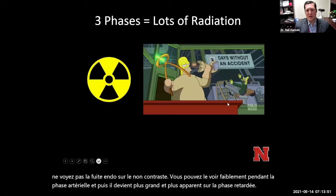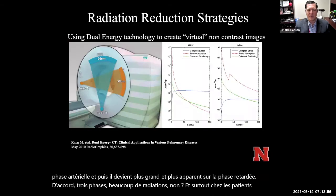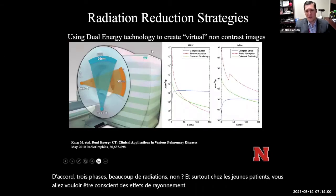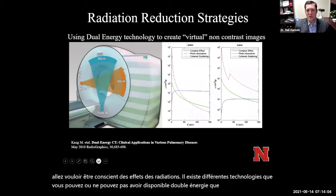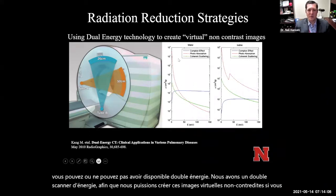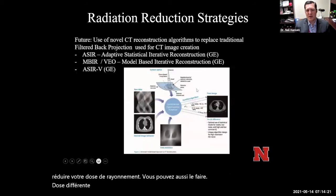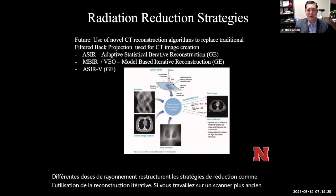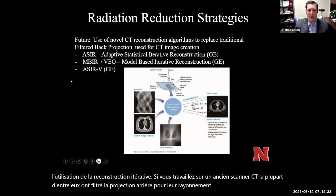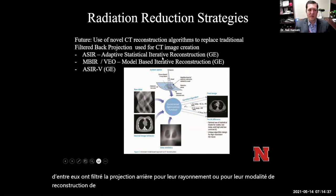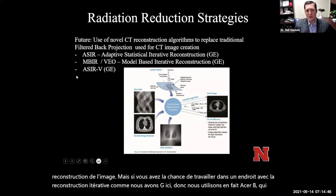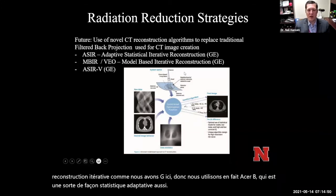Three phases is a lot of radiation, and especially in younger patients you want to be conscious of radiation effects. There are different technologies which may be available, like dual energy — we have dual energy scanners so we can create virtual non-contrast images, which can lower radiation dose. You can also use different radiation dose reduction strategies like iterative reconstruction. On older CT scanners, most use filtered back projection for image reconstruction. If you have iterative reconstruction available — we use GE's ASIR, an adaptive statistical reconstruction method — using these for high-radiation studies is very beneficial.